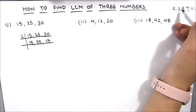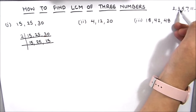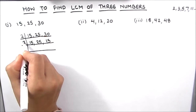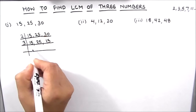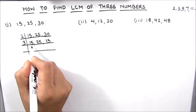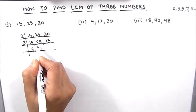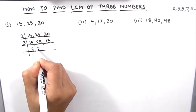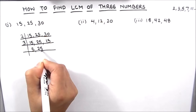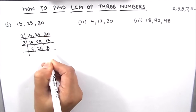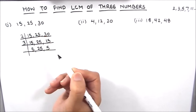So let's try our next prime number 3 to divide the three numbers. So 15 is fully divisible by 3 — 3 times 5 is 15. 25 is not fully divisible by 3, so we will write it as is. And again 15 is divisible — 3 times 5 is 15.